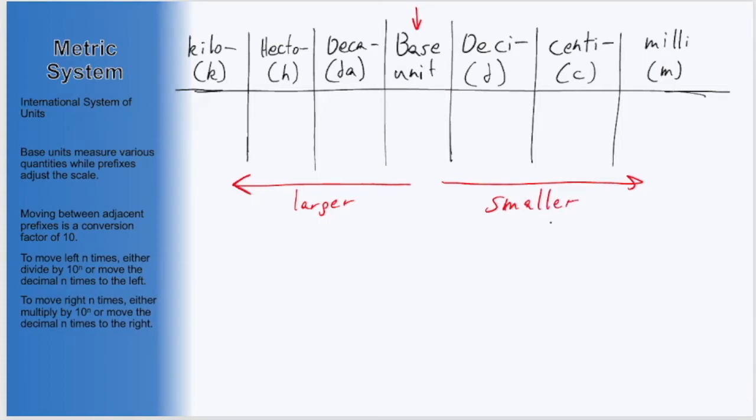For each space we move left or right on this table, there is a factor of 10 difference in the scale. Consider our base unit being one unit, or I'll just abbreviate unit as U. This could be one meter, one liter, and so on.